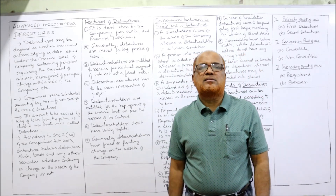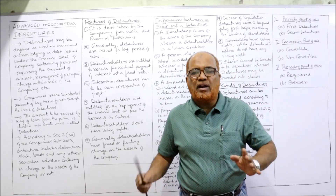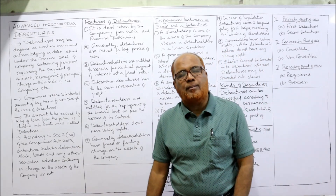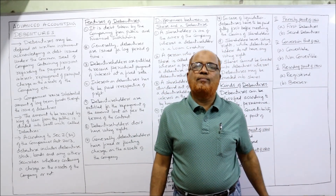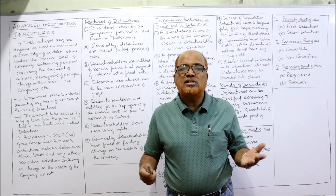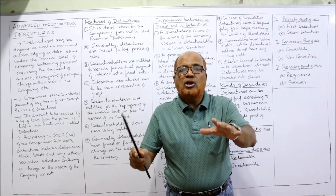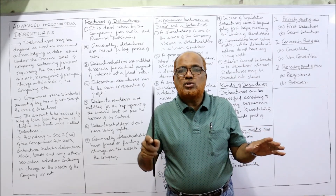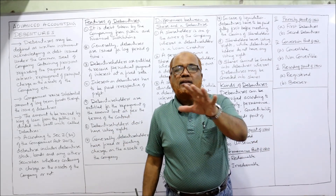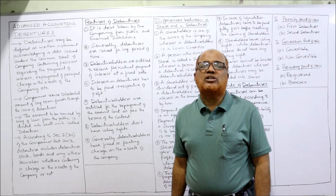Debenture owners do not have voting rights. Only shareholders have voting power in the functioning of the business; debenture holders do not have voting power because they are outsiders. Generally, debenture holders have a fixed or floating charge on the assets of the company. There are two types: secured and unsecured. Without security, the public will not give a loan to the company, so the company provides a charge on its assets. If the company defaults on repayment or interest, the debenture holder can exercise that charge. These are the seven features of debentures.